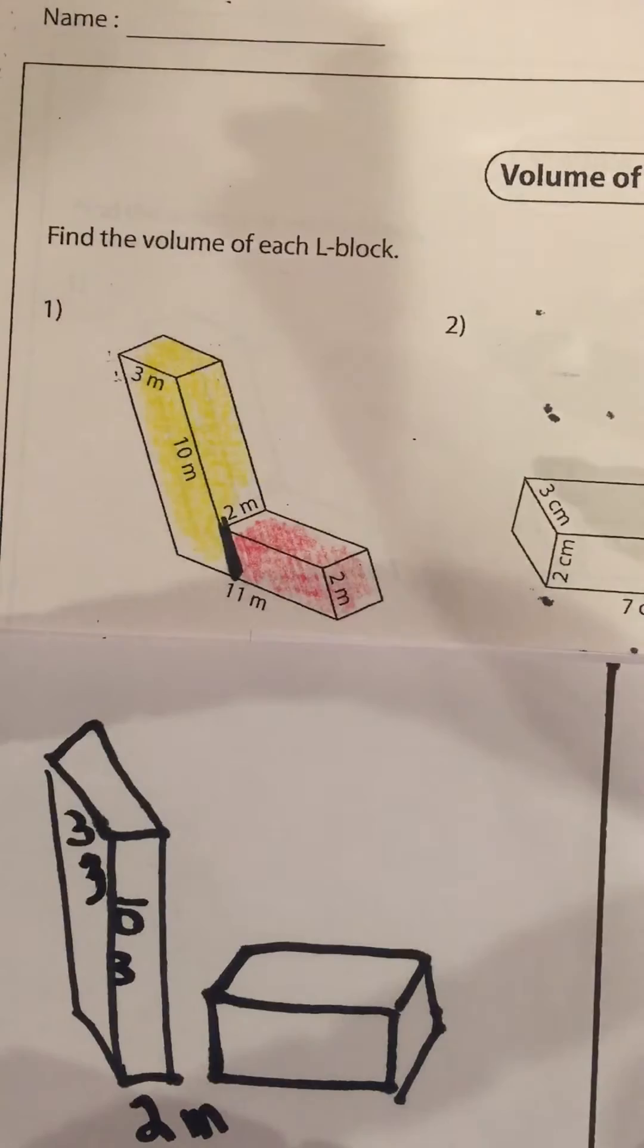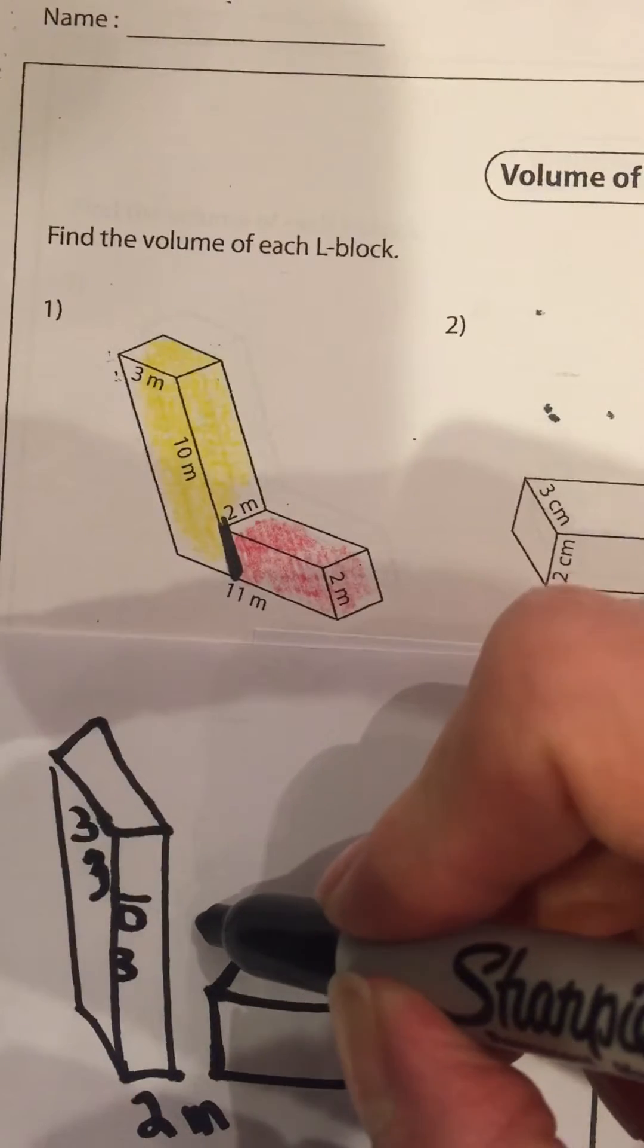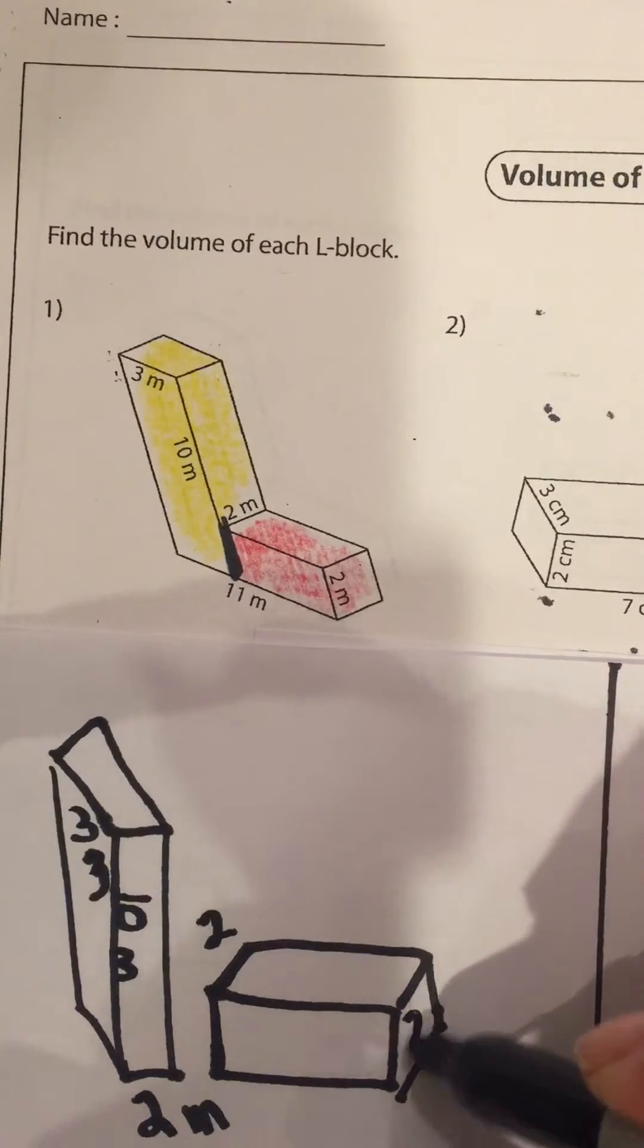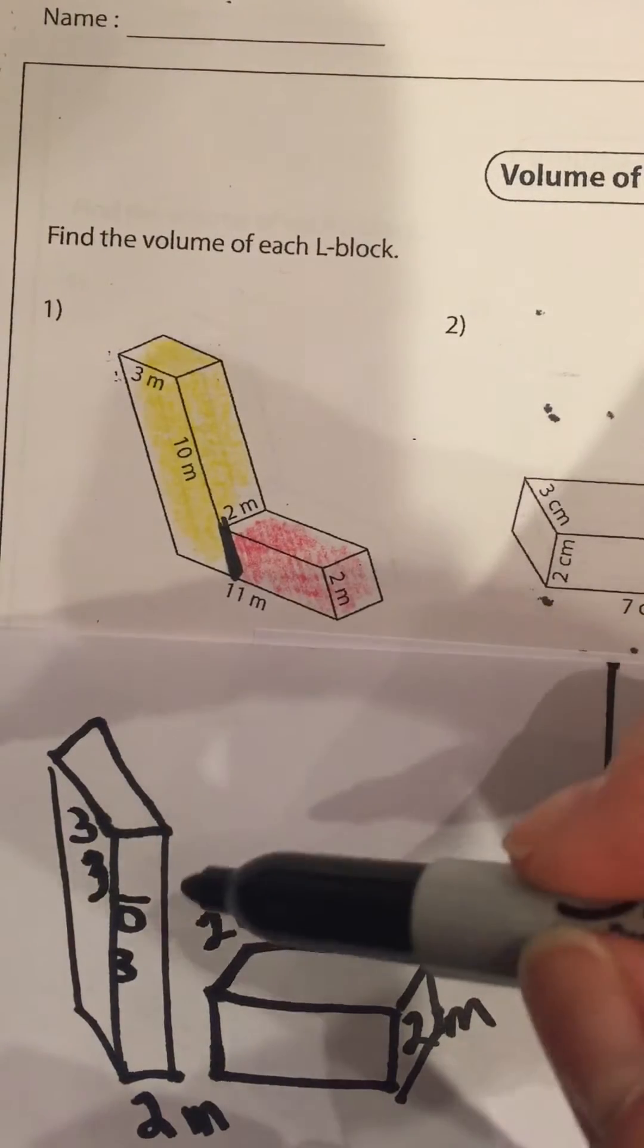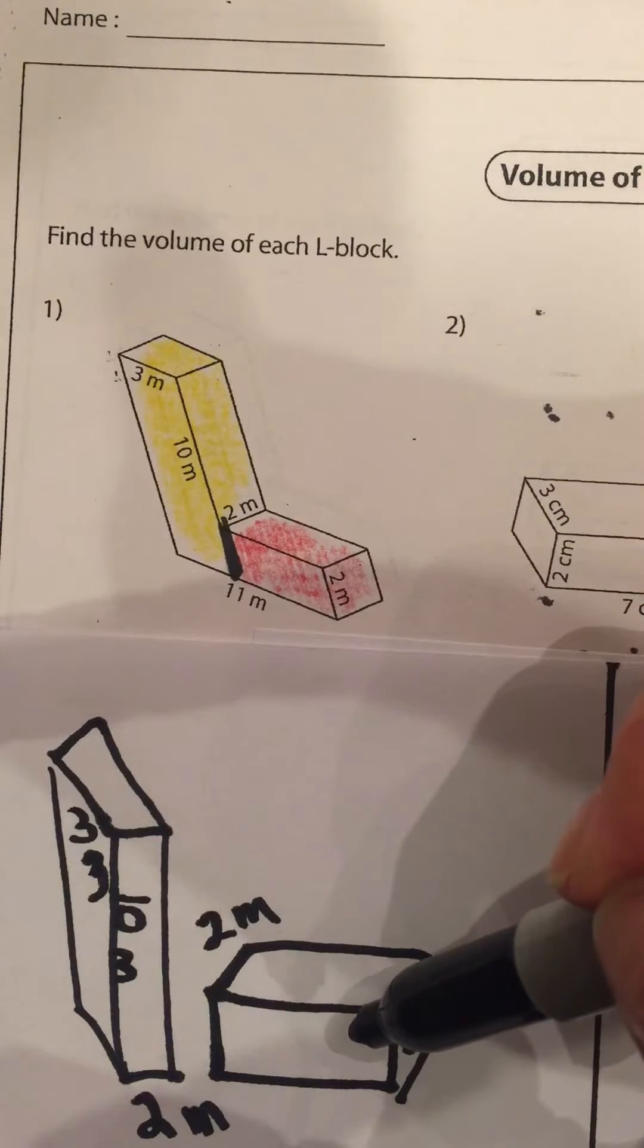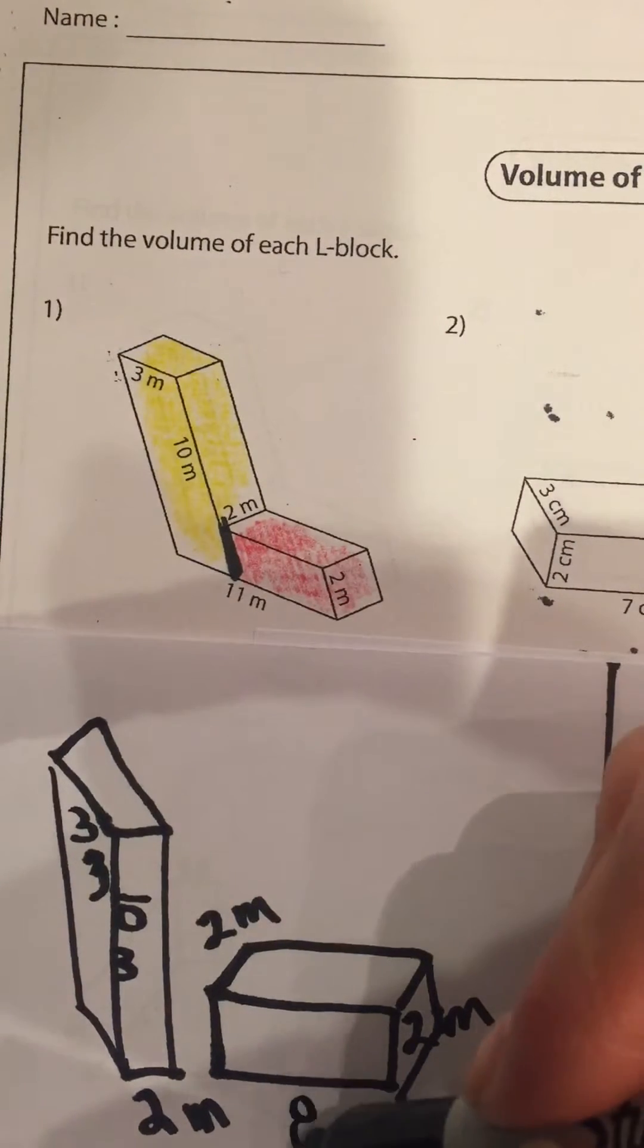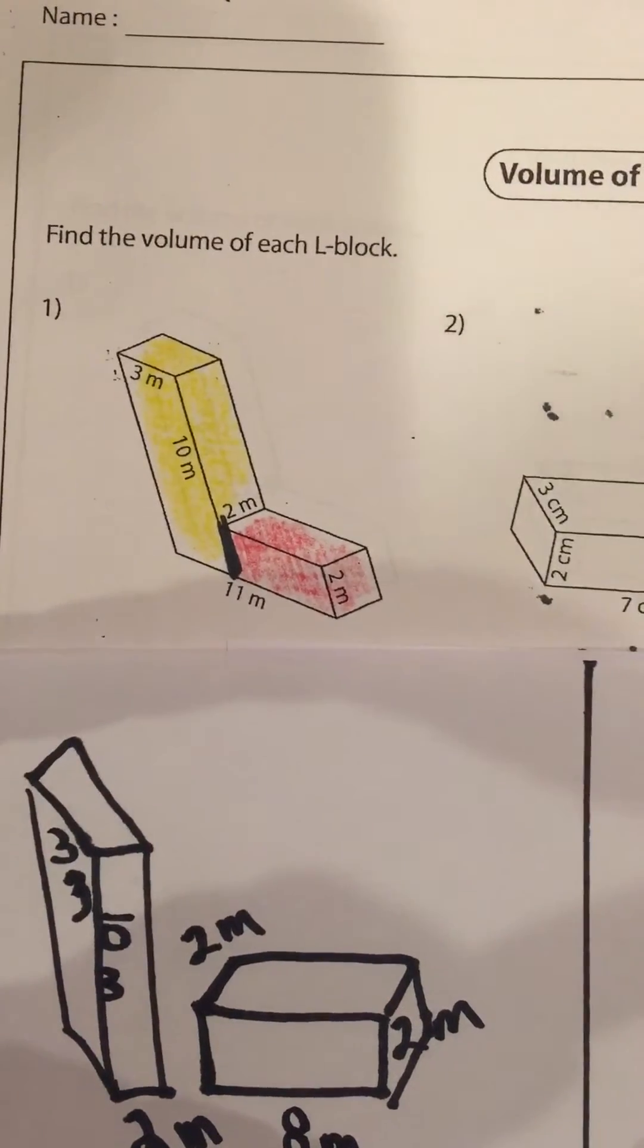Now looking at the second shape, this remains two meters deep here, two meters high, and it was 11 but we cut this piece off. So in order to figure out our new dimension for our smaller box, we're going to take the 11 and we're going to take three away. So 11 take away three is eight, so our new dimension here is eight meters.